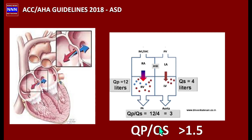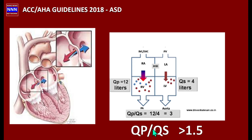When there is an atrial septal defect and the left atrium contracts, part of the blood enters the right side, increasing the right ventricular outflow volume. For example, if Qp is 12 liters and Qs is 4 liters, the Qp:Qs ratio is 3. For device or surgical intervention, a Qp:Qs ratio greater than 1.5 is required — this is an important threshold we will see on the flowchart.